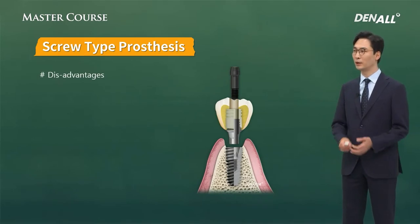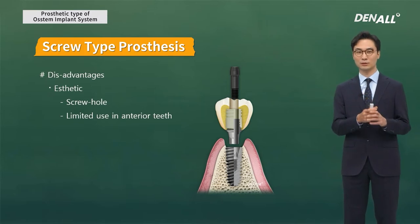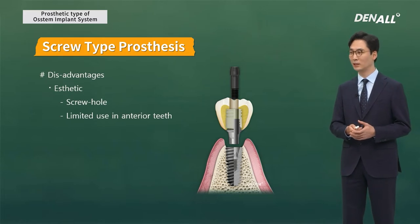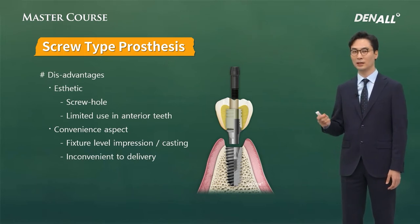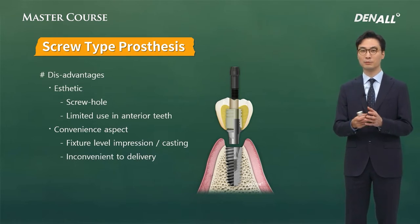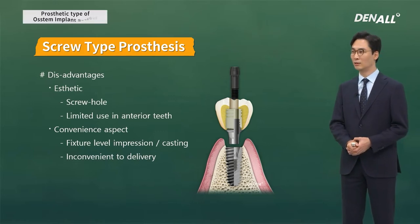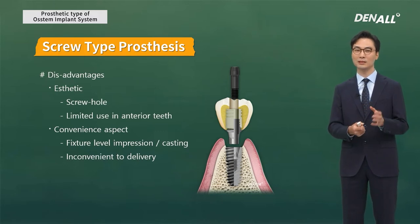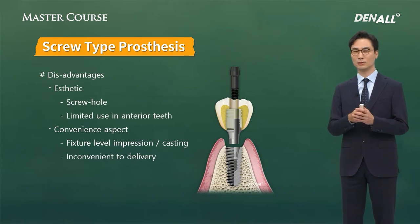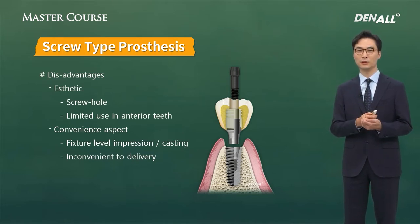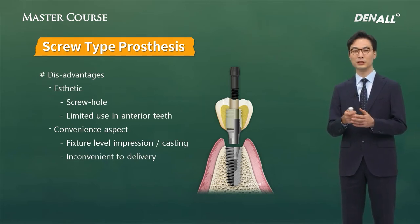On the other hand, the screw type does have disadvantages. The screw hole is aesthetically unfavorable. Unless the screw hole comes out in a very accurate direction, it may be difficult to use in the anterior region. In terms of convenience, an implant-level impression needs to be taken. In most cases, a direct cast abutment is required — wax-up and casting is needed, which may be more cumbersome and technique-sensitive in this era of digital dentistry. As the number of units increases, it becomes more technique-sensitive.